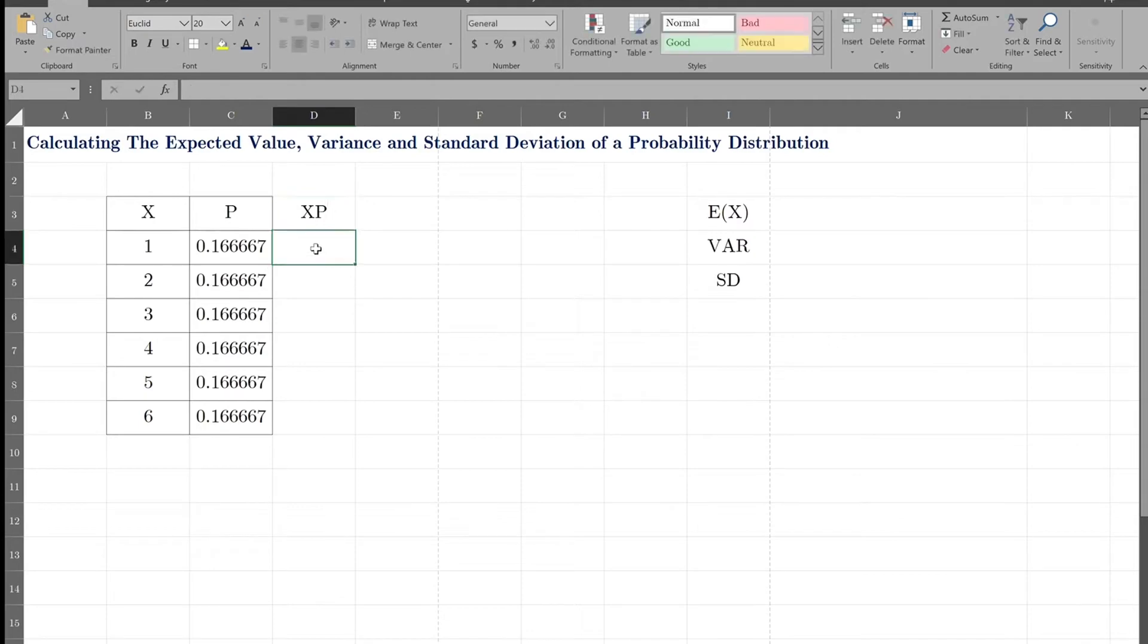Okay, so let's see. It will be X times P. Then I drag it down. So here's all my XP's, and I have to add these up, and that will give me—so the sum of these numbers here will give me the expected value.